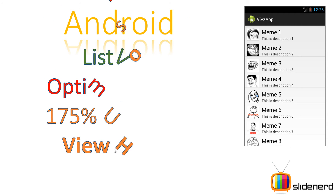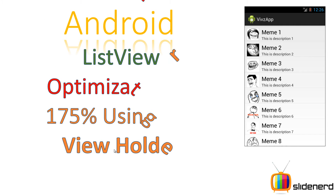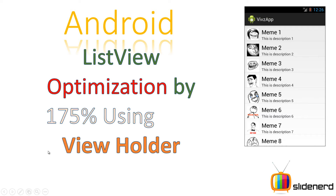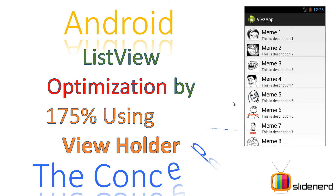Hello from SlideNerd. In this video I'm going to talk about how you can optimize your list view by 175% using a special design pattern in Android called the View Holder Design Pattern. This is an advanced topic. If you guys have not seen my previous videos where I created this list view, please go back and check them out, otherwise you are not going to understand anything. In this video I'm going to discuss the concept behind this View Holder Design Pattern and in the next video I'm going to show you how to implement it.